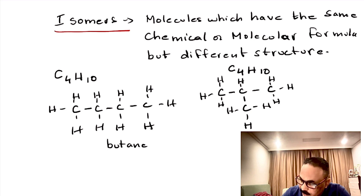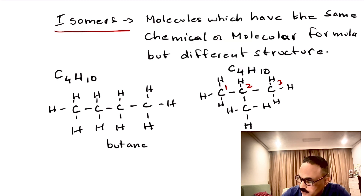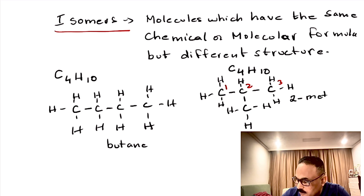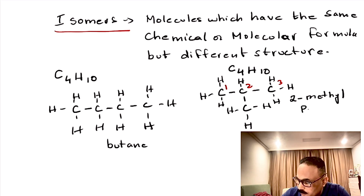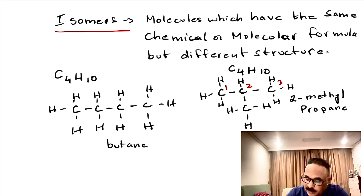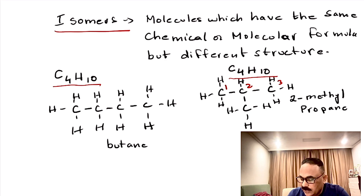Now let us name this. The methyl group is attached to the second carbon, so it is 2-methylpropane. We can write it as 2-METHYL propane. According to the rule we can write it with a capital but this is fine also. So these are the two isomers of butane — one is butane and one is 2-methylpropane. They have the same formula C4H10 but they have different structure.